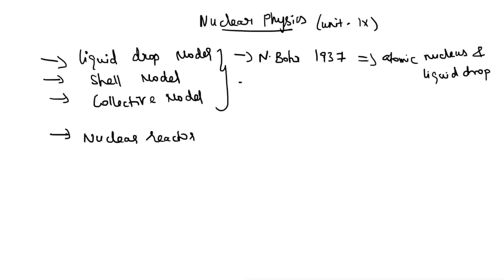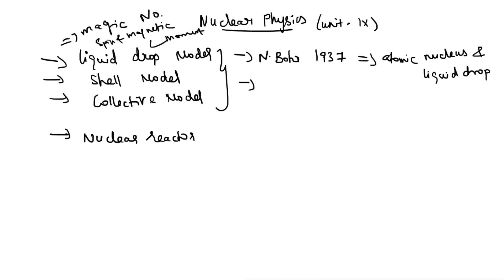What is the shell model? What are the similarities discussed in the shell model? The shell model came about due to the failures of the liquid drop model. What are the failures faced in the liquid drop model? One is magic number and another one is spin and magnetic properties or momentum. These are all the failures of the liquid drop model.